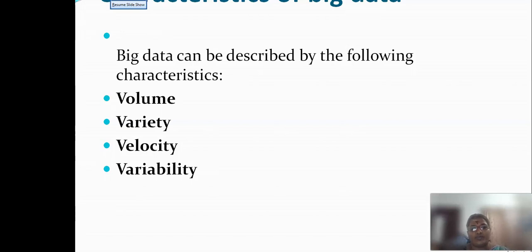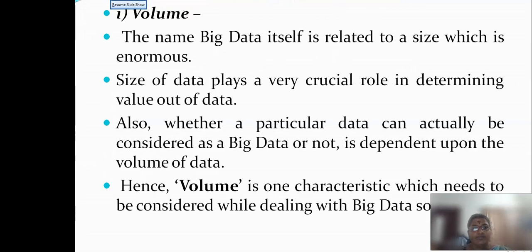Big data can be described by the following characteristics. First is volume, variety, velocity, and variability. Volume means the size. The name big data itself is related to a size which is enormous. We can't even predict the amount of data flow.